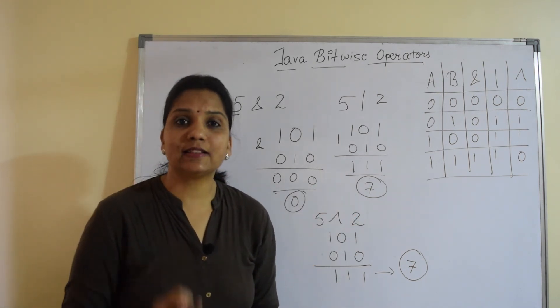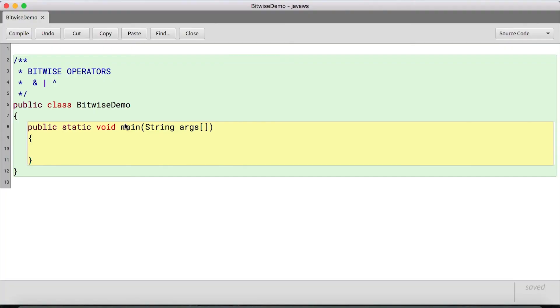So I have a class created over here with the main method. We will see the demo on the bitwise operators AND, OR, and XOR. So let's create 2 variables. A equals 5 and B equals 2. I'll say int cand equals A AND B.